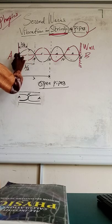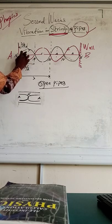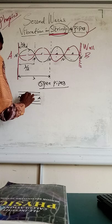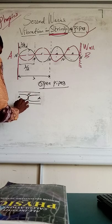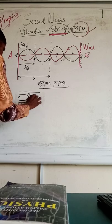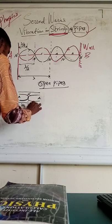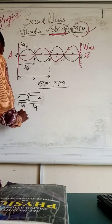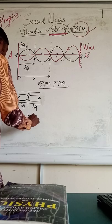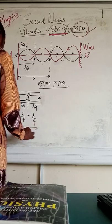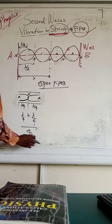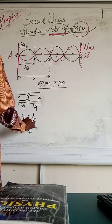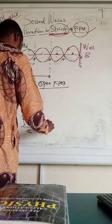From one antinode to the node is lambda over 4, and from the node to the other antinode is also lambda over 4. So the total is lambda/4 + lambda/4, which equals 2 lambda over 4.